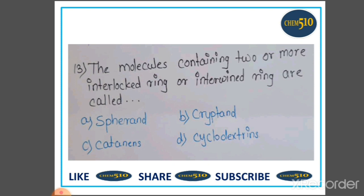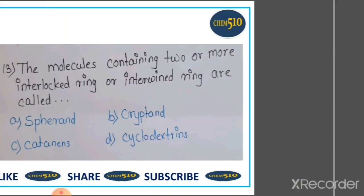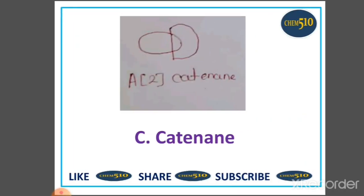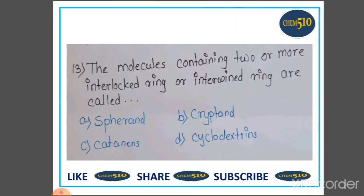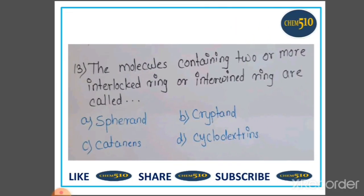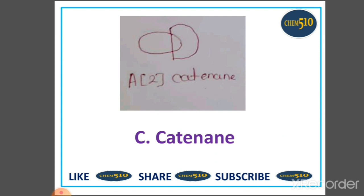Thirteenth question: Molecules containing two or more interlocked rings or intertwined rings are called — Option A: spherands, B: cryptands, C: catenane, D: cyclodextrin. Catenanes have interlocked rings present, so option C is correct: catenane.